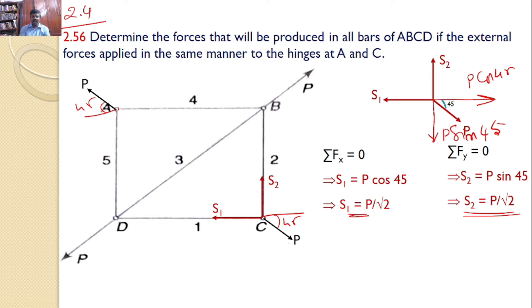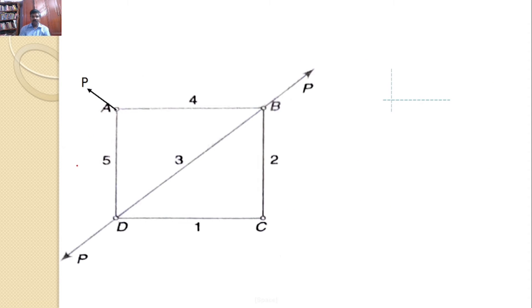Same concept we can extend for bar A also. So, here also you can find one force is S4. Another force is S5 and the force is P. And you know that P makes an angle 45 because the force acts along the diagonal. Diagonal makes an angle 45. So, P makes an angle 45 with the horizontal. So, the horizontal component you can say it is P cos 45 and the vertical component we can say it is P sin 45.